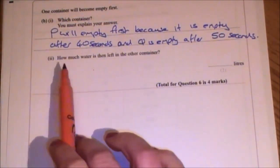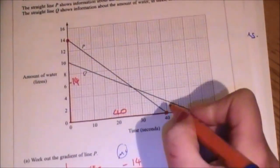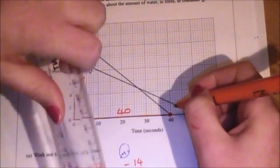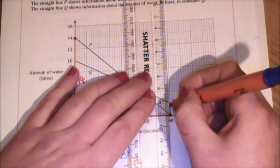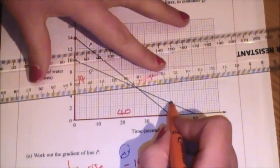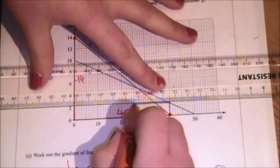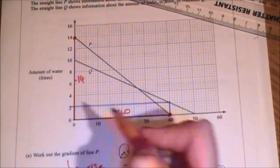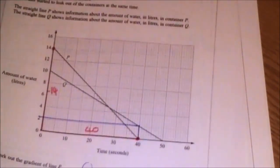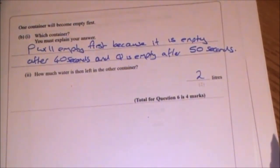Part two asks, how much water is then left in the other container? After 40 seconds, when it's empty, you can get your ruler and read up at the 40 seconds mark to the other container, read across, and the answer is 2 litres. That's one mark for each.